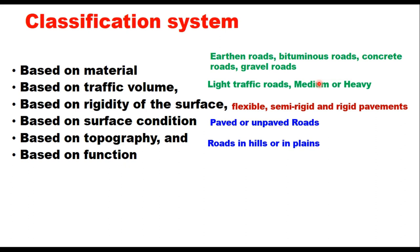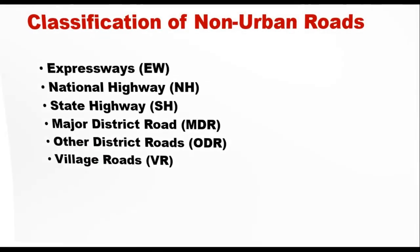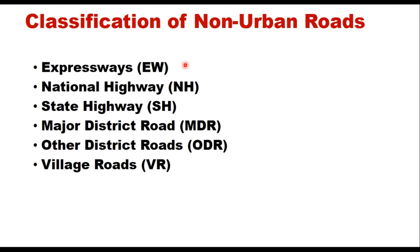Classification based on function refers to the grouping of roads by the character of the services they provide. Based on function, non-urban roads are classified as expressways, national highways, state highways, major district roads, other district roads, and village roads — six categories in total.